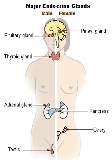In addition to the specialized endocrine organs mentioned above, many other organs that are part of other body systems, such as bone, kidney, liver, heart and gonads, have secondary endocrine functions. For example, the kidney secretes endocrine hormones such as erythropoietin and renin.